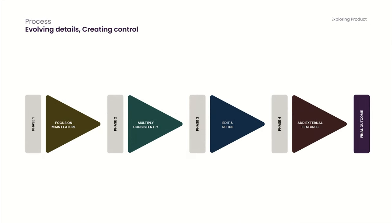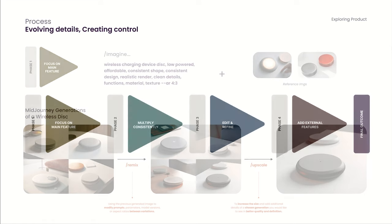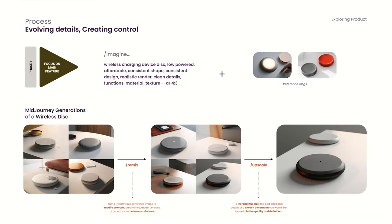When prompting, we think having the ability to control the details of the generation is key. Thinking in design phases, we prompt in an orderly sequence for maximum control of the final outcome. Firstly, we had to create consistency in the form and design of a singular disk, making use of the different commands of Midjourney — imagine, remix, and upscale. Using this order to prompt allowed us to get the most desirable design outcome.